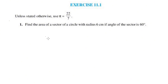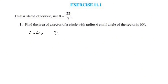If you want to find the area of a circle with a radius of 6 cm and the angle of the sector is 60 degrees — what is the radius? 6 cm. The angle of the sector is 60 degrees. What is the area of the sector?